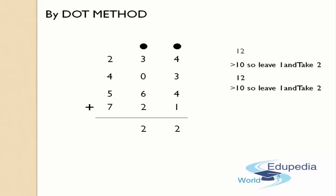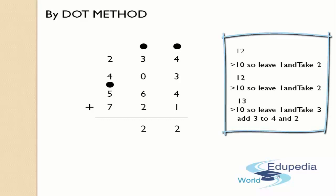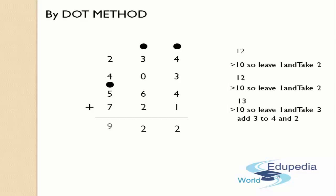Add the dot count of 1 to the next column, starting from the hundreds digits. 1 plus 7 is 8, and 8 plus 5 is 13, which is greater than 10. Leave 1 — place a dot on top of 5 — and take the remaining 3. Now 3 plus 4 is 7, and 7 plus 2 is 9. Since 9 is less than 10, write 9 in the answer's place. Count the dots: only 1, and there are no more columns, so write that count of 1 in the answer's place. The final answer is 1922.